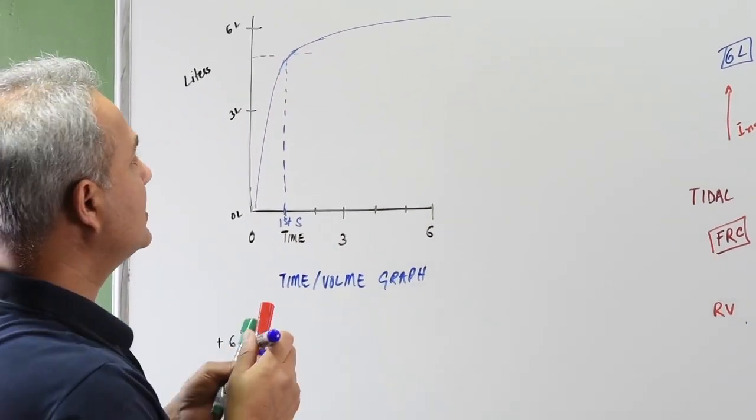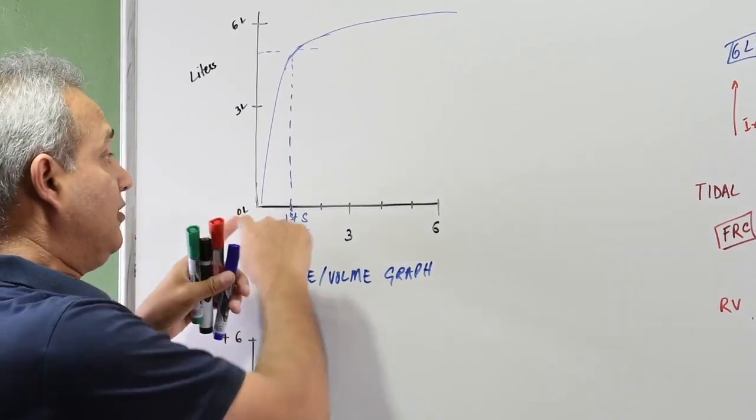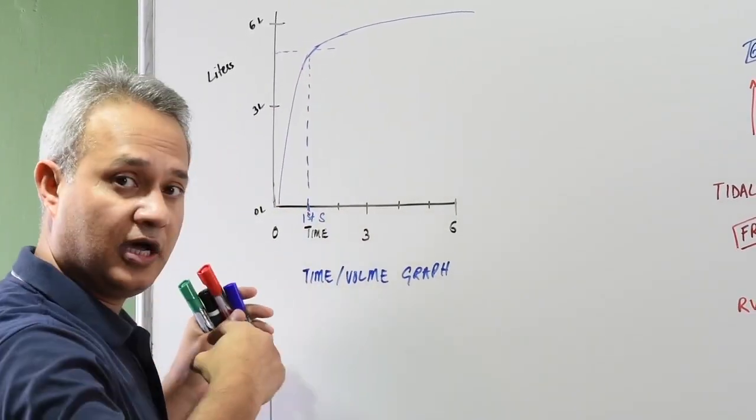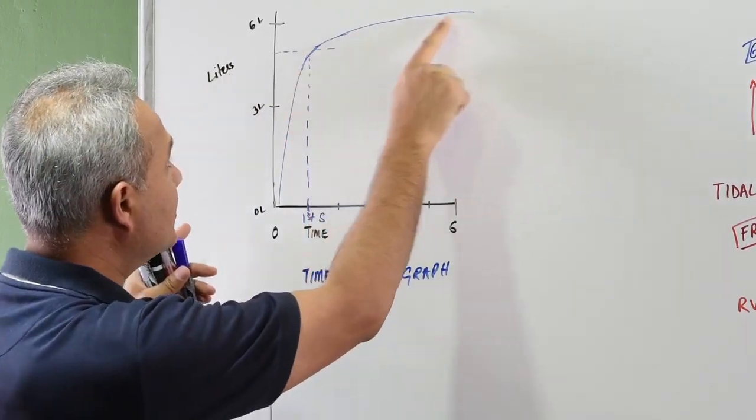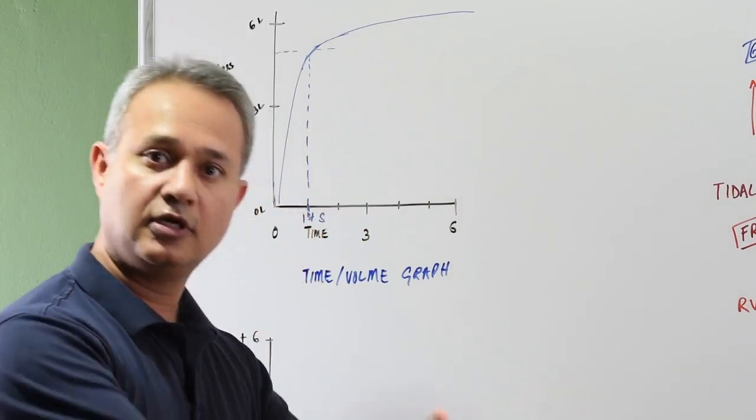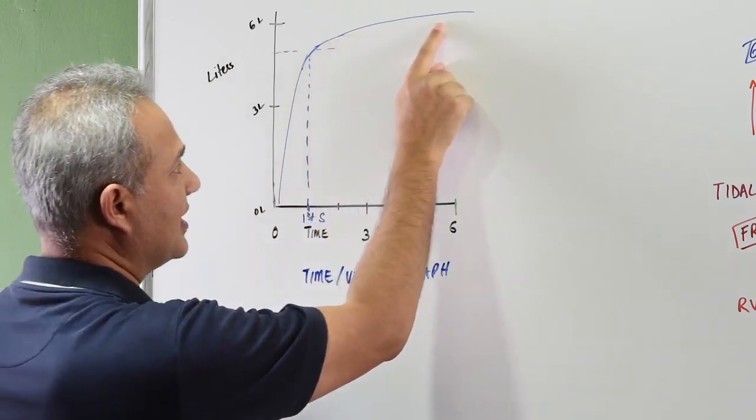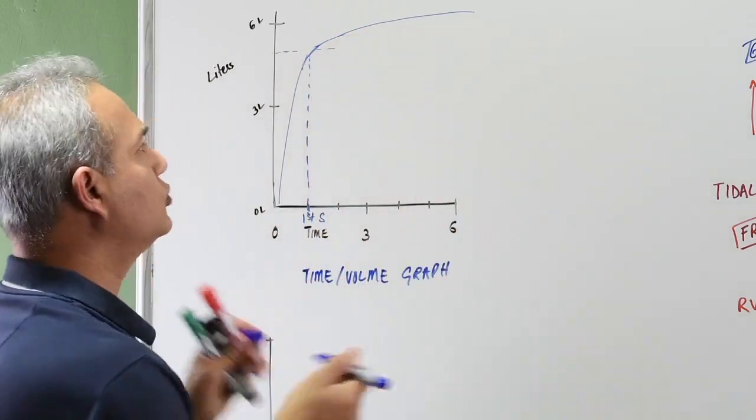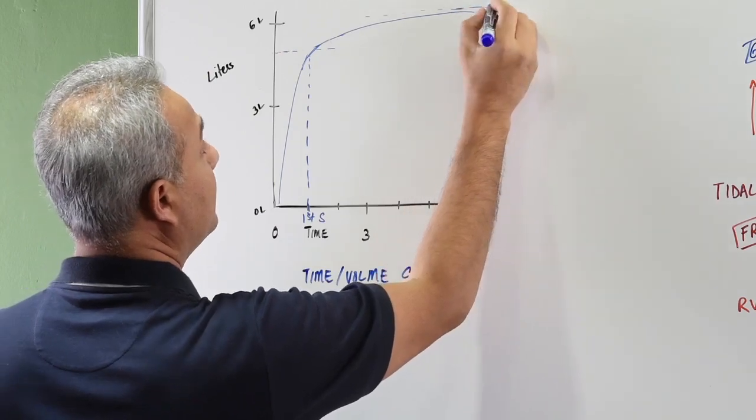So what this graph tells you is: look at this inspiration, first second - a lot of the air has been expelled in the first second. And then in the rest of the seconds you keep going, but you cannot expel this much. You would just gradually keep expelling up to, I believe, six liters in healthy people, men.